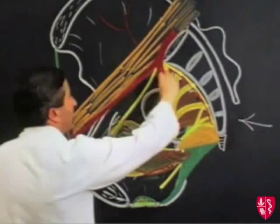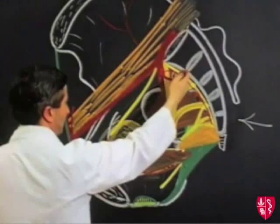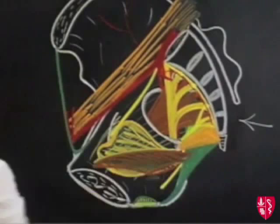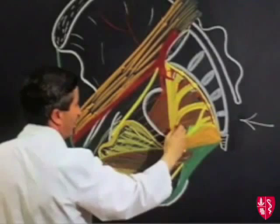Another branch, which is the most important, is the superior gluteal artery, which passes backwards between the lumbar sacral trunk and the first sacral nerve, then passes out of the pelvis into the gluteal region through the greater sciatic foramen. It actually curves forward and goes out above the piriformis.